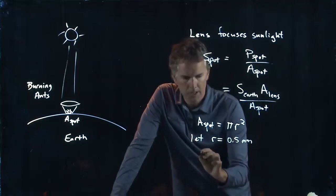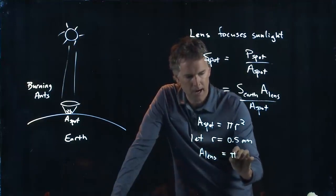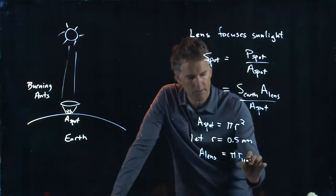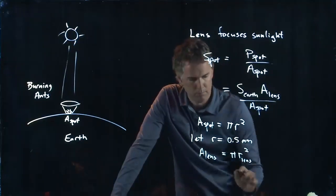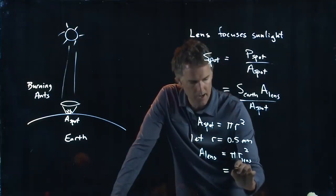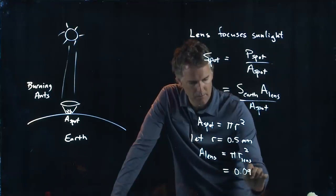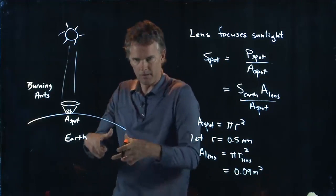And then we need to know the area of the lens and that's the pi r of the lens squared. And that can be pretty big and let's say that the area ends up about 0.09 square meters. So it's a lens maybe that big.